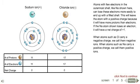Atoms with few electrons in the outer shell, like sodium shown here, can lose these electrons more easily to end up with a filled shell. This will leave the atom with a positive charge because it will have more protons than electrons. If the sodium atom shown loses an electron, it will have a net charge of positive one.